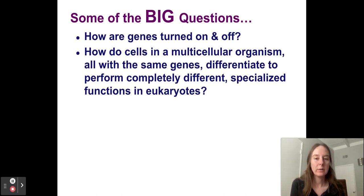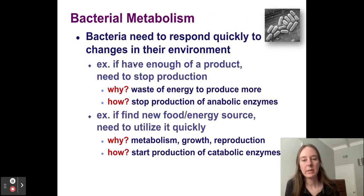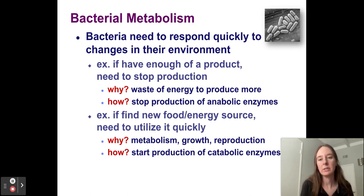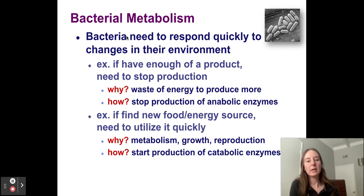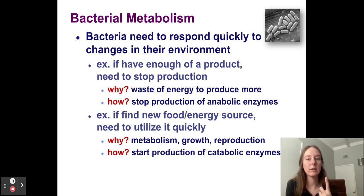How does this work in eukaryotes? We'll also look at how it works in prokaryotes like bacteria. Unicellular organisms don't have 40 trillion cells — they don't need to specialize or differentiate. But how do they turn genes on or off? The first thing you need to know is that bacteria need to respond quickly to changes in their environment. If there's one environmental stressor, it could threaten the survival of that single-celled organism.